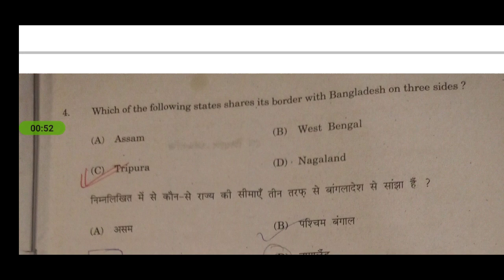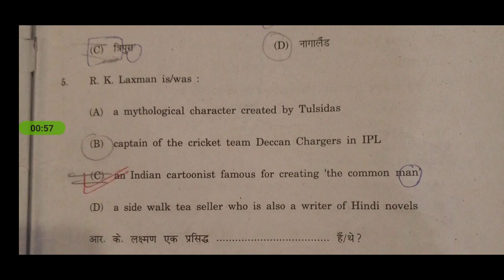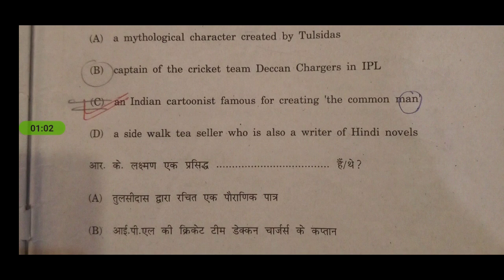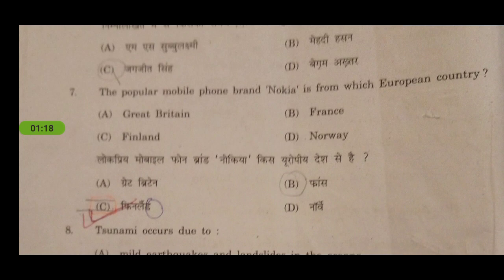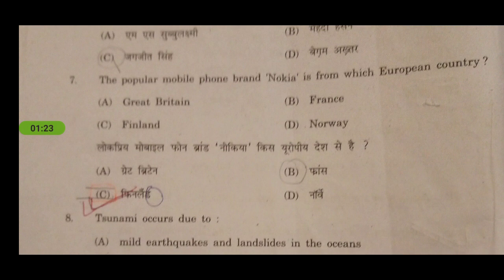Next question: which of the following states shares its border with Bangladesh on three sides? The answer is Tripura. Next question: RK Laxman was an Indian cartoonist famous for creating the Common Man. Next question: who among the following is not associated with ghazal? The answer is MS Subbulakshmi, as she is a Carnatic music singer who sings bhajans.